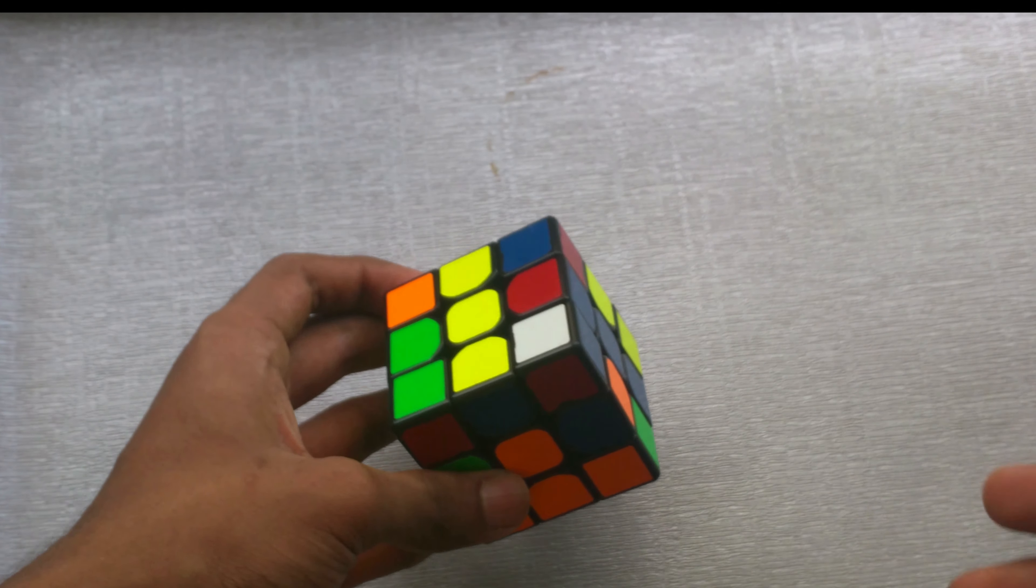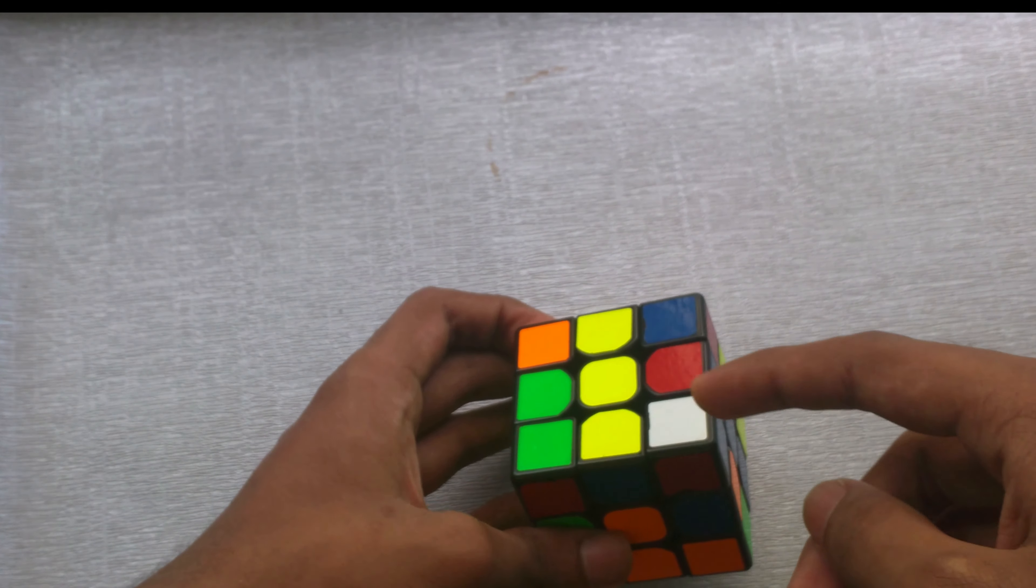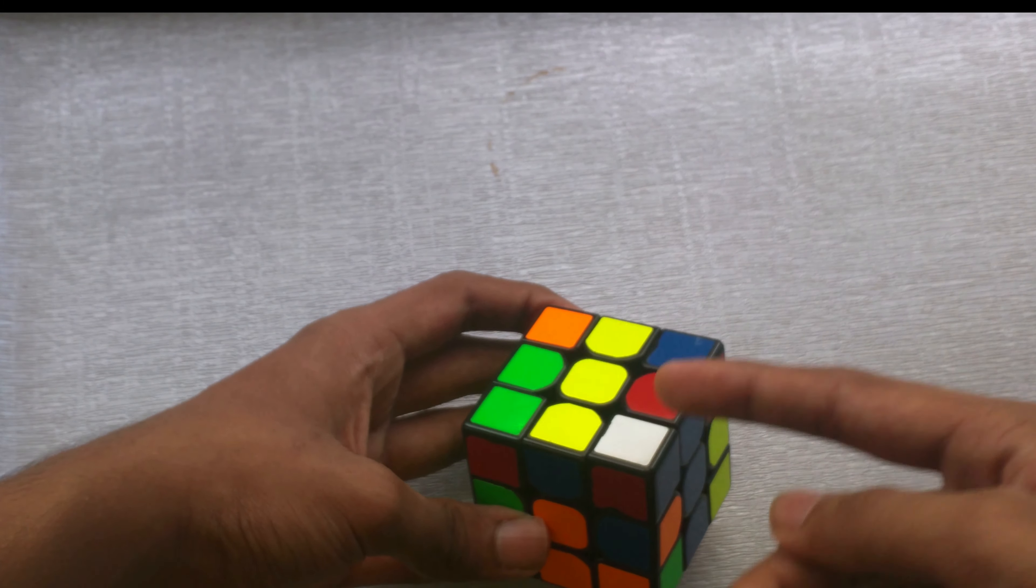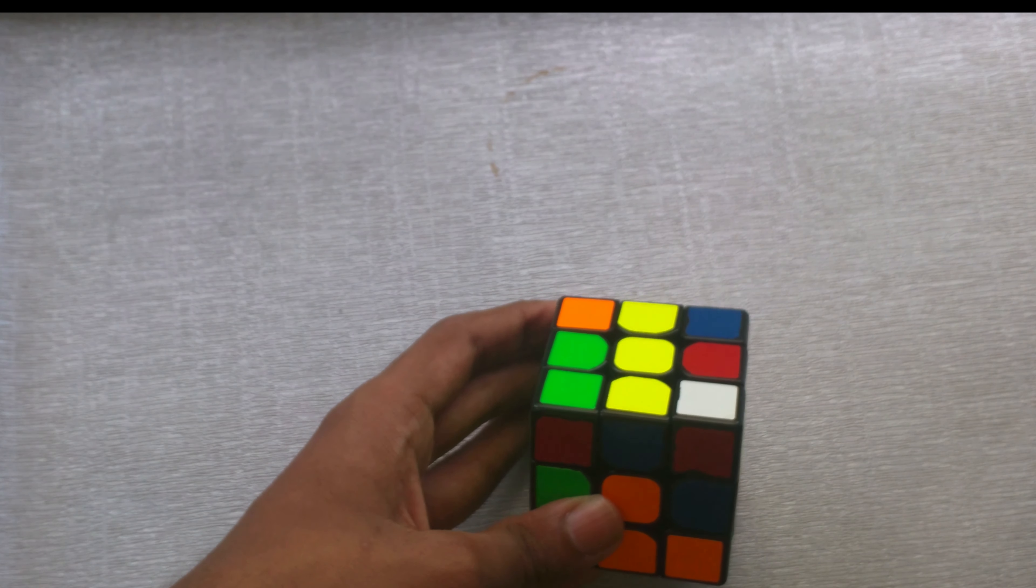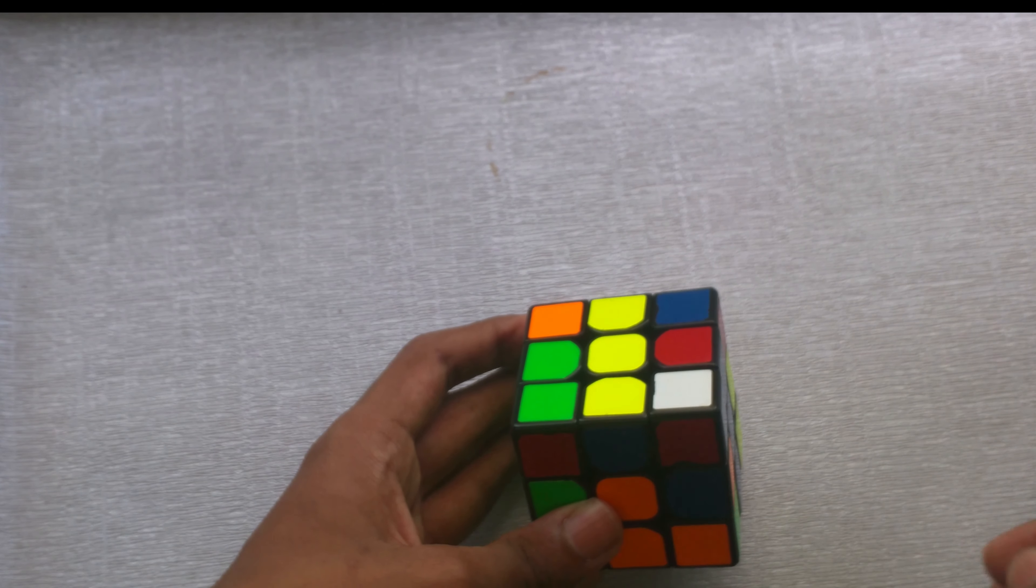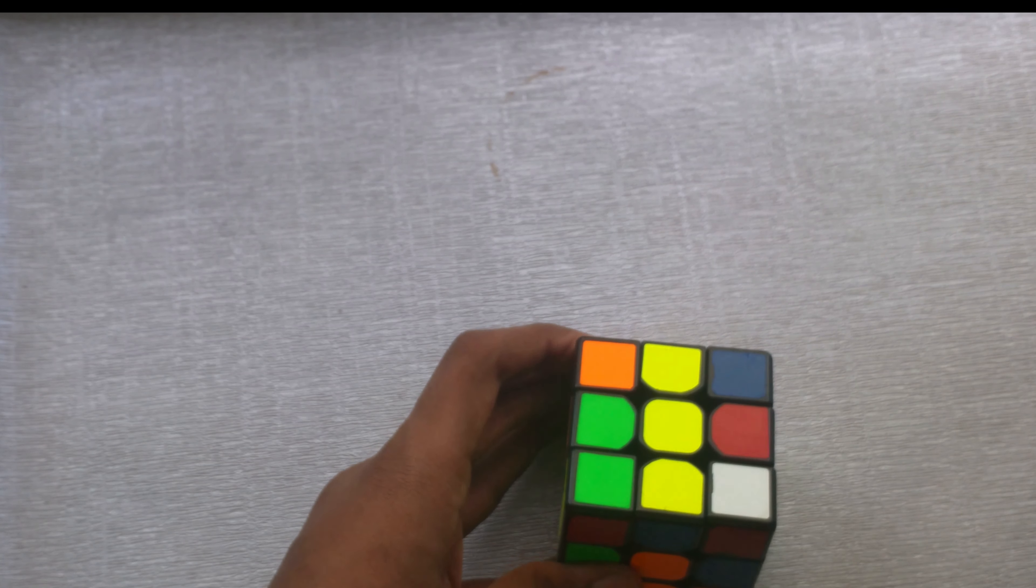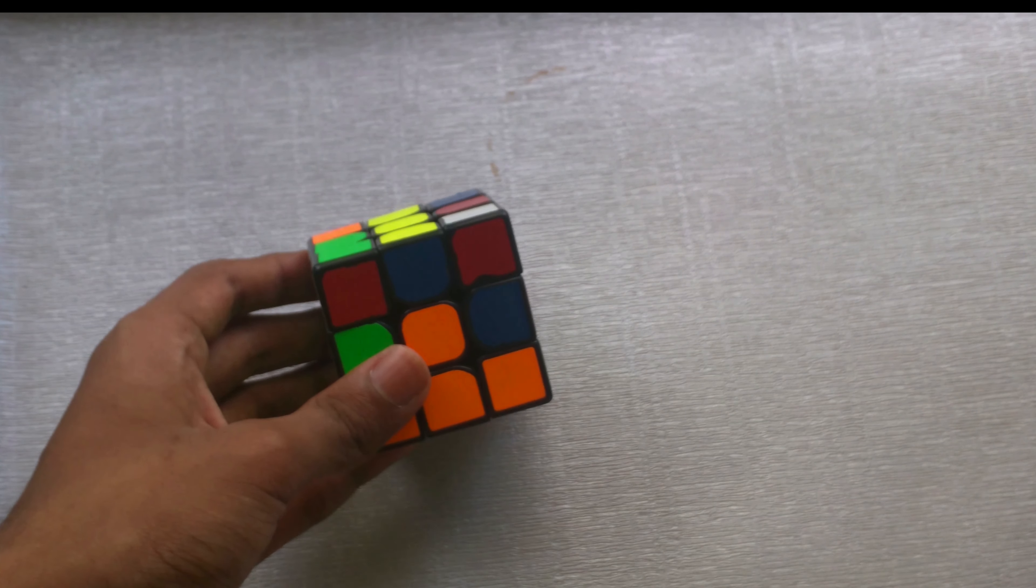But that's not the only case you can get. What if the pieces are like this, where the white is on top and the edge is right next to it? In this case, you want to separate these pieces first by the same logic that we used to combine the pieces in the previous example.